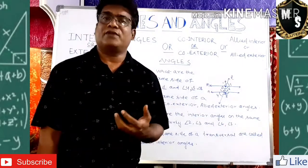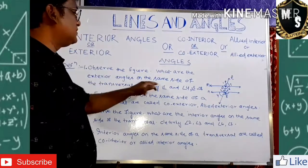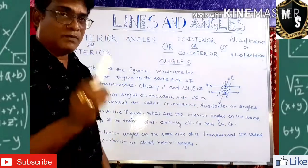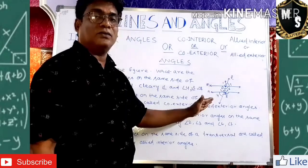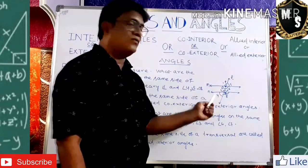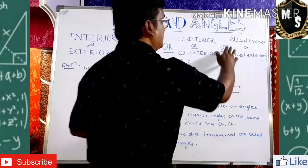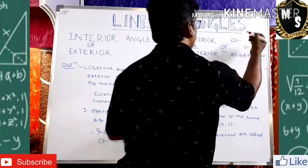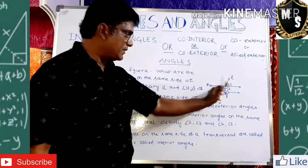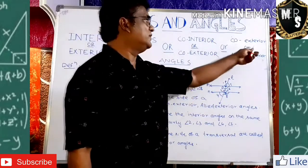Now, when are exterior angles called co-exterior or allied exterior? Exterior angles are 1, 4, 5, and 8. On the same side of the transversal, there are only two exterior angles — angles 1 and 4. Because they are exterior angles present on the same side of the transversal, they are called co-exterior or allied exterior angles. Similarly, angles 5 and 8 on the other side are also co-exterior or allied exterior angles.